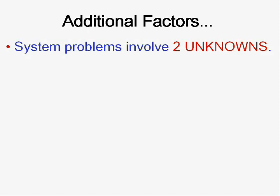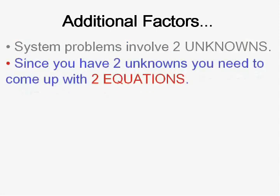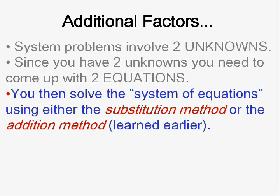System problems involve two unknowns, not just an X but generally a Y or whatever you want to call it. Since they have two unknowns, you're going to have to come up with two equations from the words that they give you in the actual word problem. Once you have the two equations, you're going to use either the substitution method or the addition method that we learned earlier to solve and find the X and the Y.